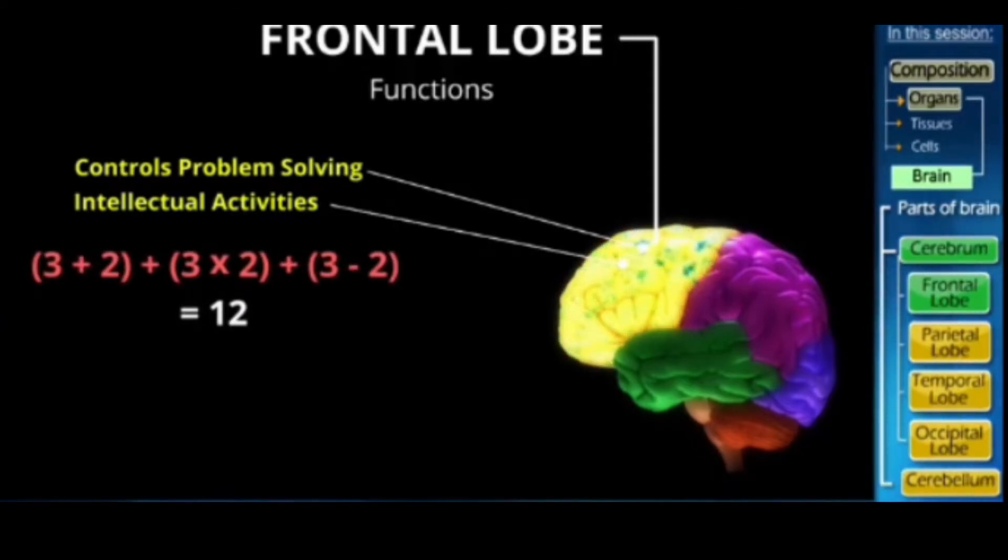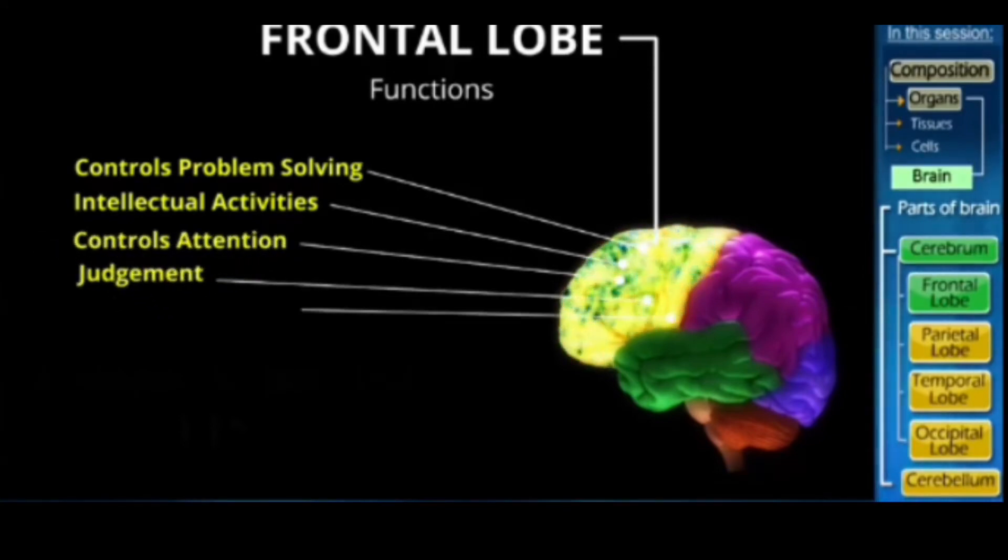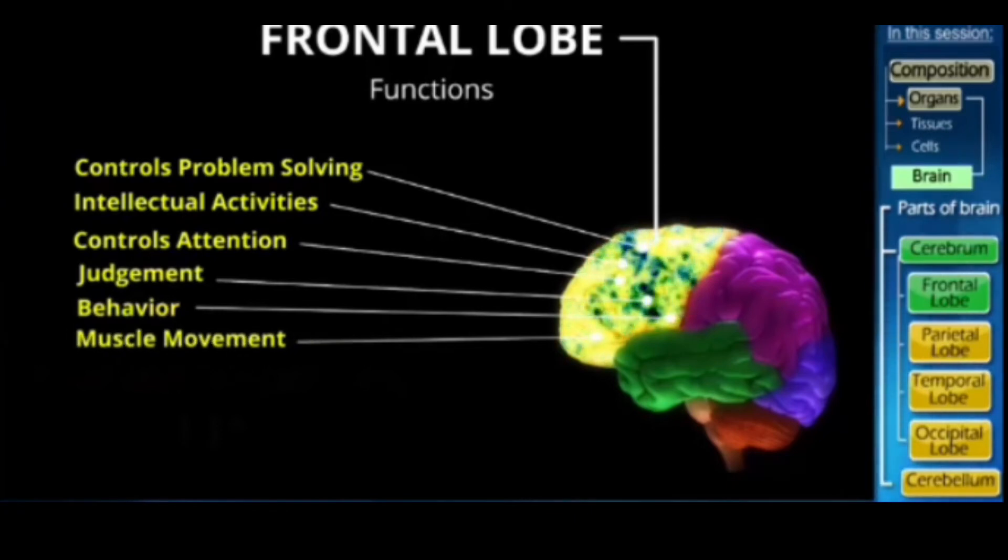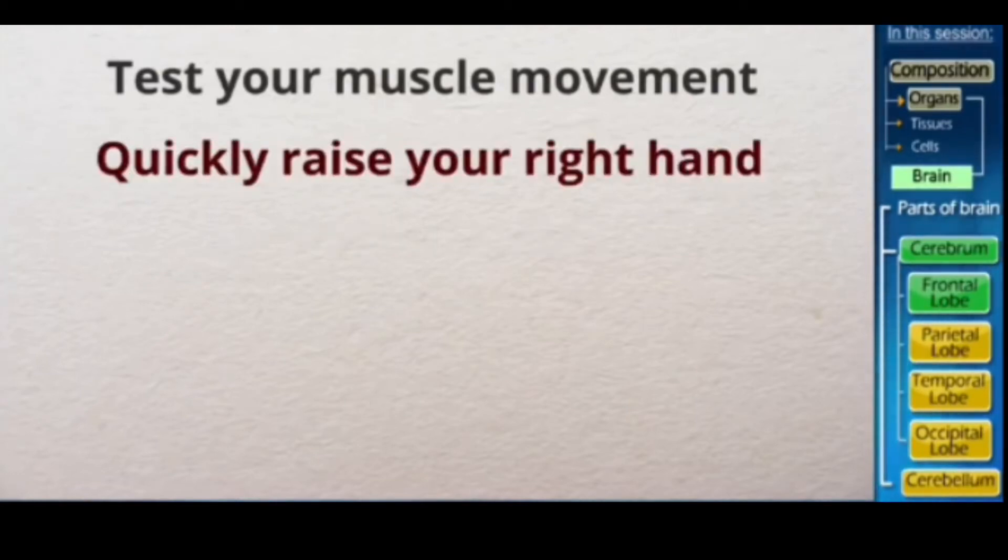And intellectual activities. So right now to solve this problem your frontal lobe was actively involved. Some other functions are that this frontal lobe controls attention, judgment, behavior, muscle movement. So now let's test our muscle movement. Are you ready? So on my command quickly raise your right hand. Very good, so your frontal lobe is functioning really well.